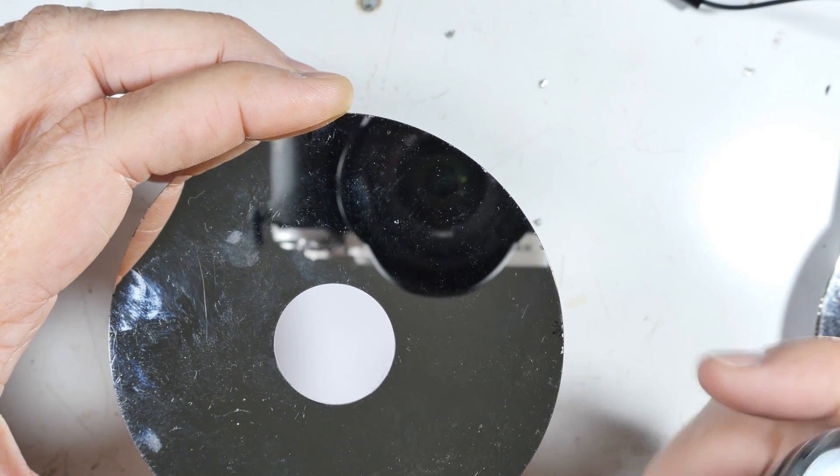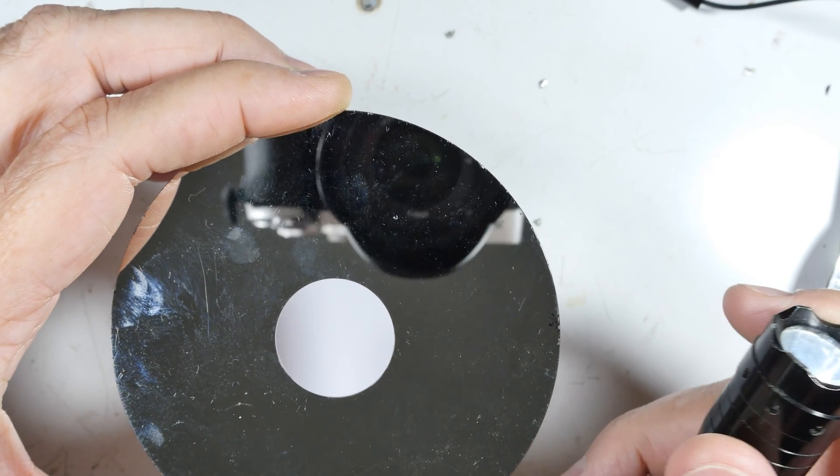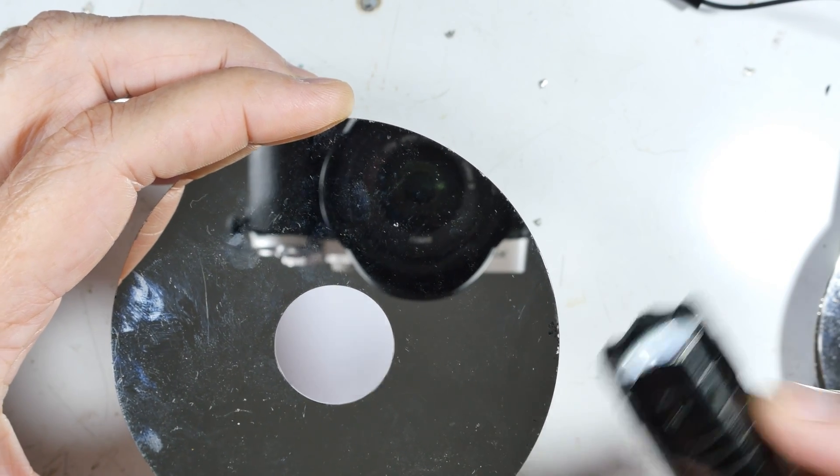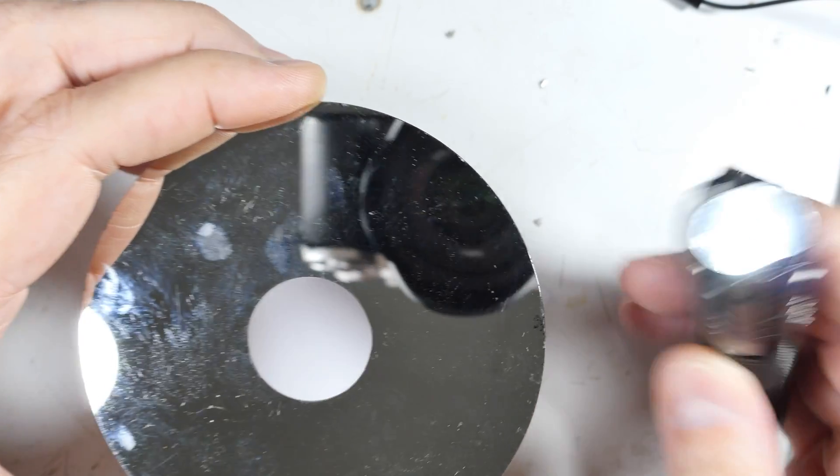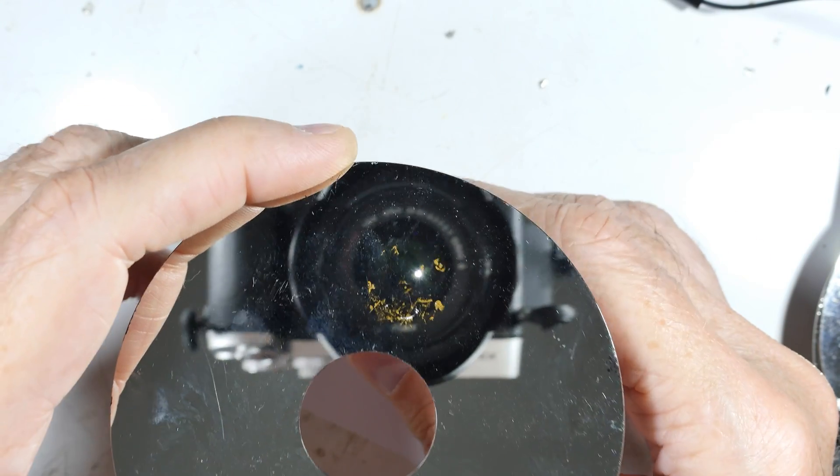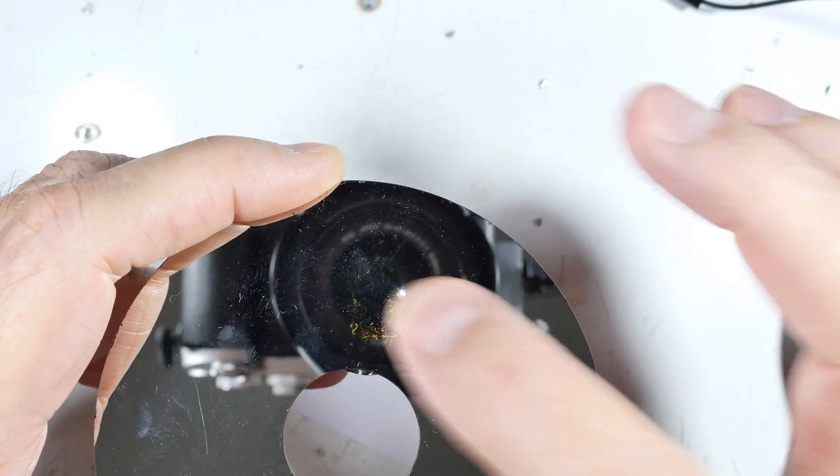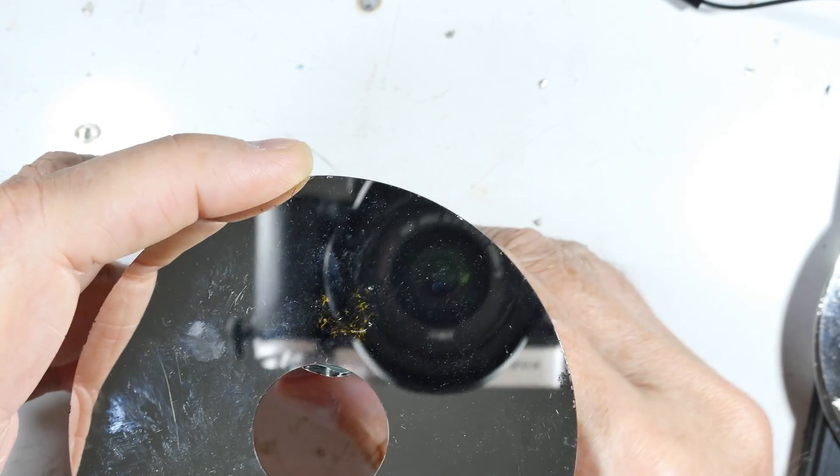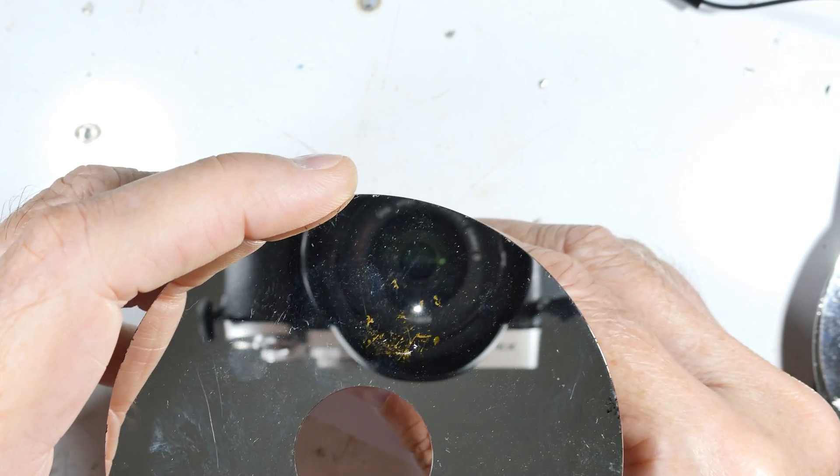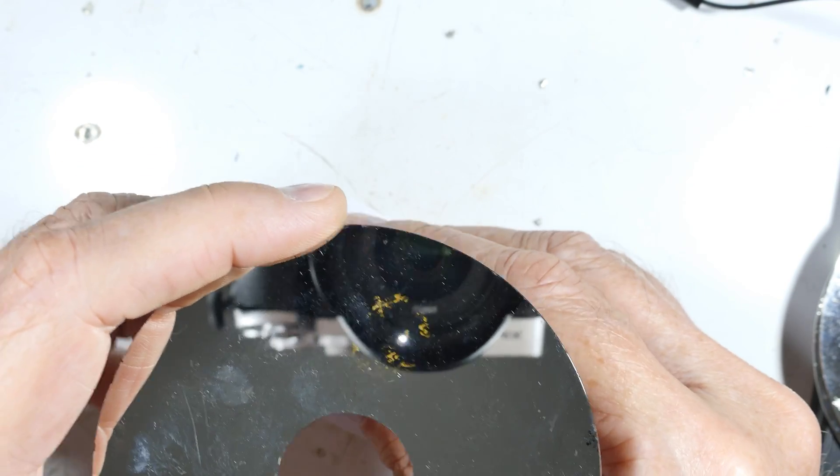So how do we tell if we have a glass disc? Just get a flashlight or a bright light source and shine it underneath. And if there's a defect on both sides, you'll see - see that spot right there? Yeah, so this is a glass disc.